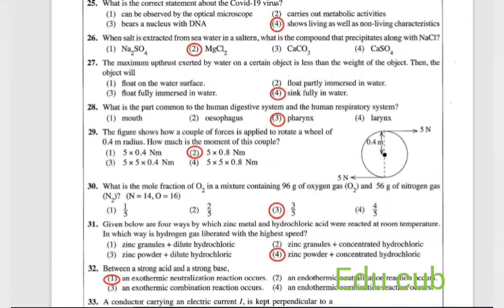Question 29: the figure shows how a couple of forces is applied to a rotor with 0.4 meter radius. How much is the moment of the couple? When you are finding the moment of this couple, you have to multiply 5N by the diameter. The diameter will be 0.8 meter. So you have to multiply 5 by 0.8. The answer is the second one.